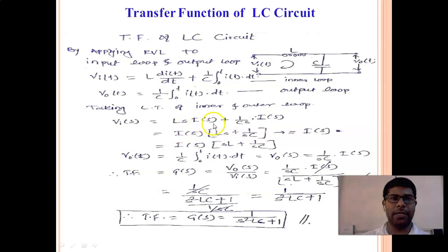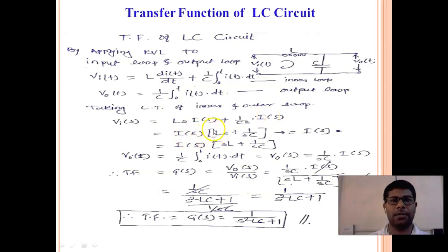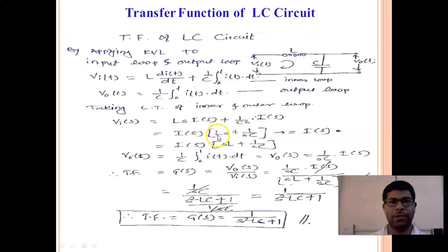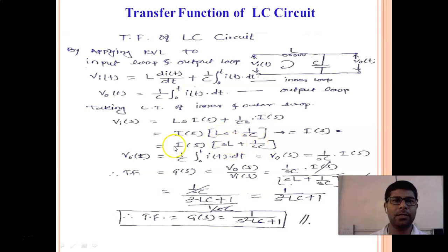We rearrange this equation. Here I(S) appears in both terms, so we take I(S) as common: V(S) = I(S)·[Ls + 1/(Cs)]. Rearranging, I(S) equals V(S) divided by [SL + 1/(SC)].